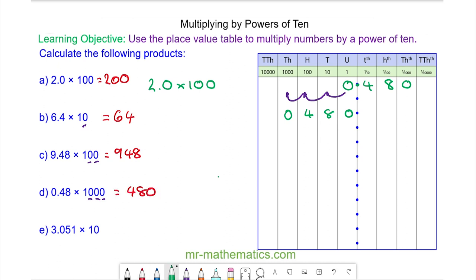And for question e, 3.051 multiplying it by 10, so we move one place to the left, so it becomes 30.51.